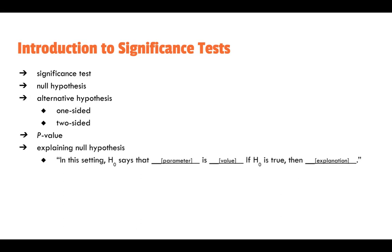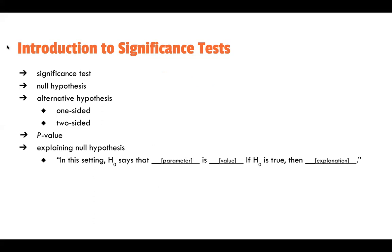The standard phrasing for interpreting the null hypothesis is: 'In this setting, the null hypothesis H₀ says that [parameter] is [value]. If H₀ is true, then [interpretation].' Using our example: H₀ is that P — the proportion of students passing the class — equals 0.6. Make sure you define what P is in context. If the null hypothesis is true, then the proportion of students that pass the class is 60%.